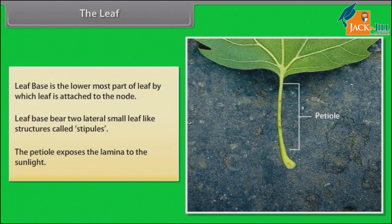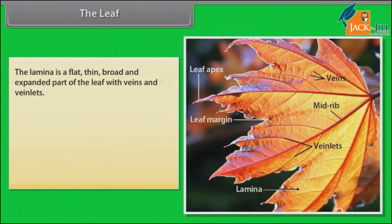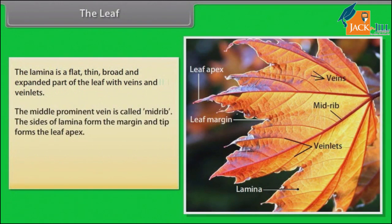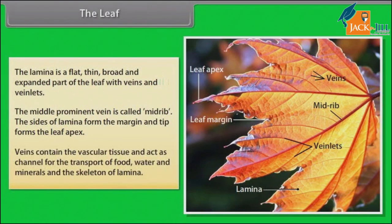The petiole exposes the lamina to sunlight. The lamina is a flat, thin, broad and expanded part of the leaf with veins and veinlets. The middle prominent vein is called the mid-rib. The sides of the lamina form the margin and the tip forms the leaf apex. Veins contain the vascular tissue and act as channels for the transport of food, water and minerals, and form the skeleton of the lamina.